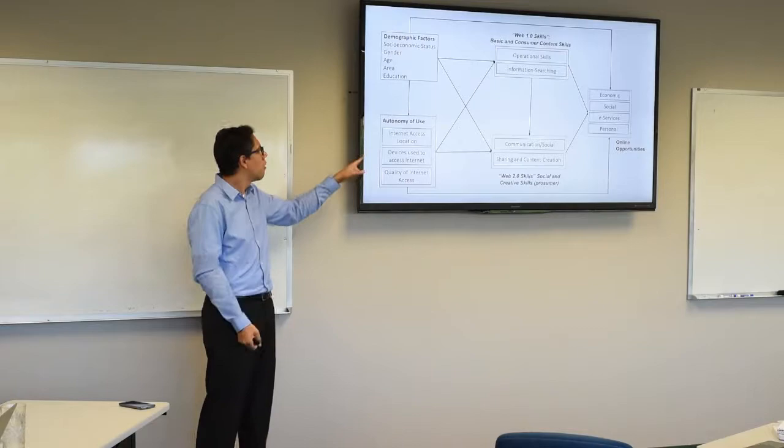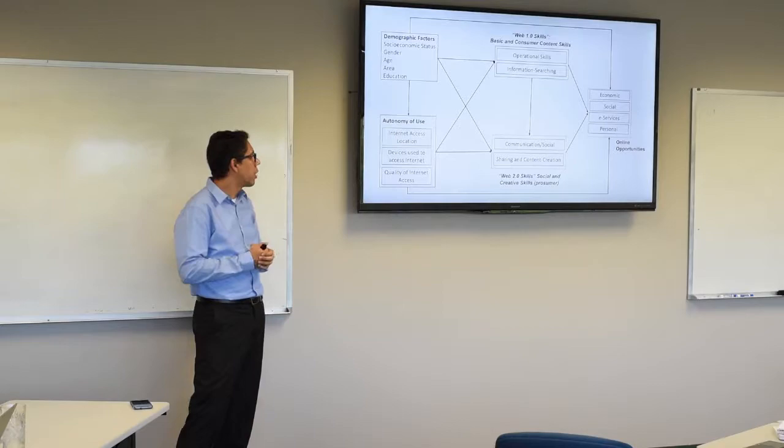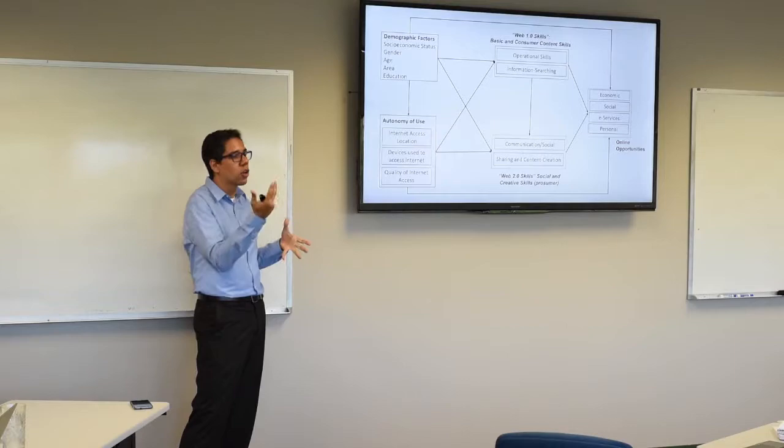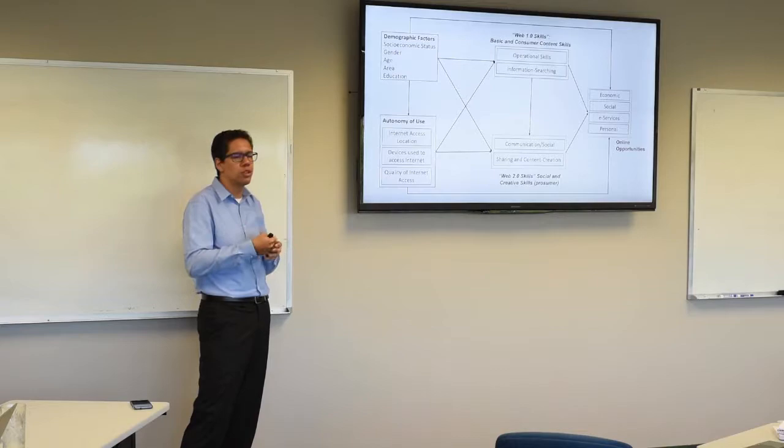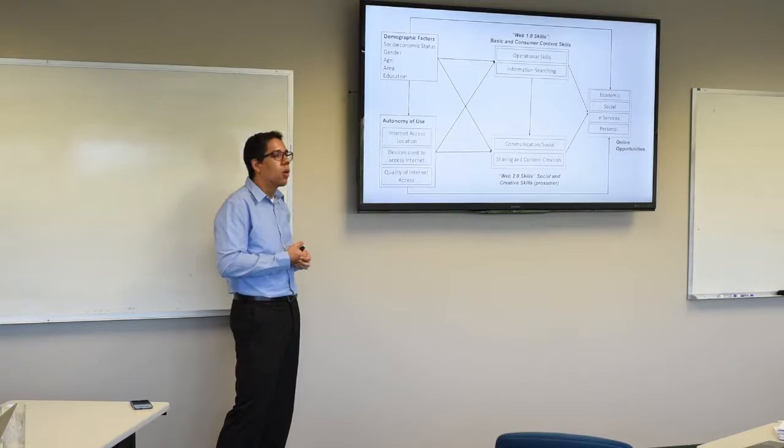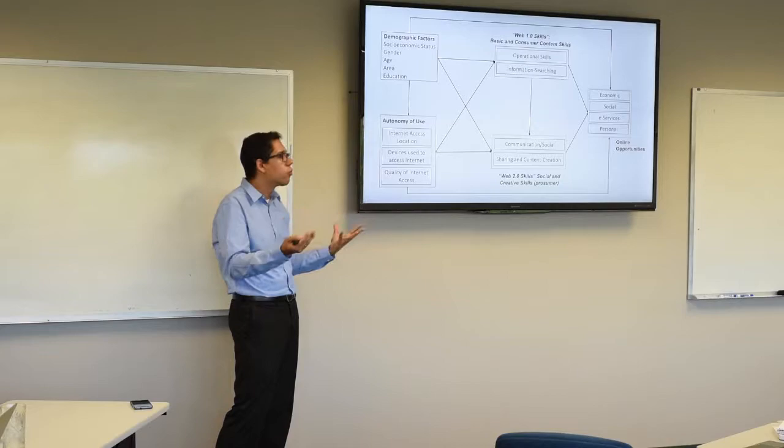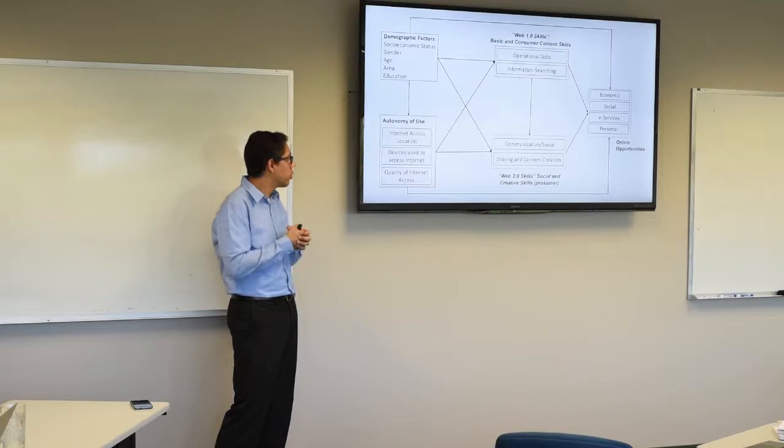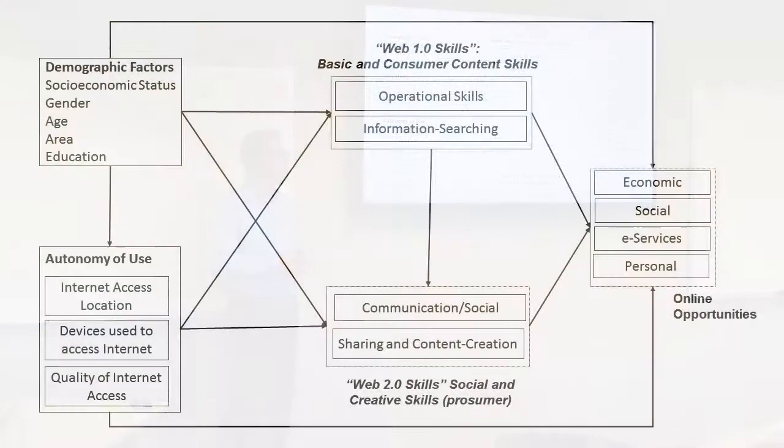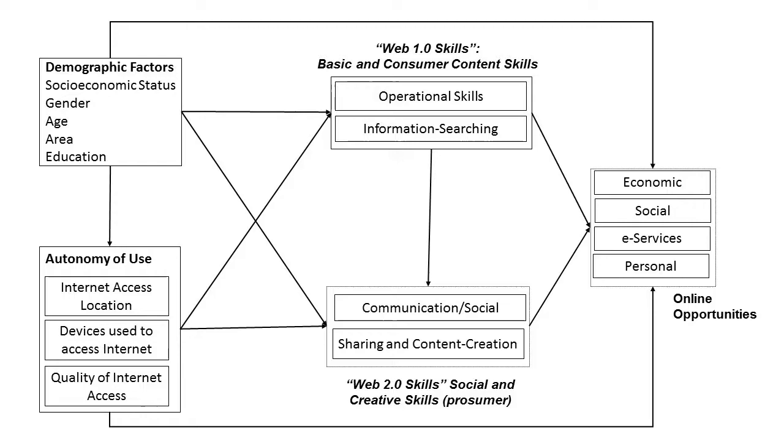And to operationalize this concept, we consider three complementary dimensions. First, the internet access location. I consider it as an important dimension because those who use internet at home and have opportunity to use in another place have much more autonomy of use than, for example, has opportunity to use the internet only in a telecentre. Device is another important dimension. We are asking which kind of device you use, only computer, only mobile, or both multi-platform. And then the quality of internet access. Because you can actually use internet anywhere, different devices, but if your quality of internet is not good, for example, like a dial-up connection, probably the quality or kind of interaction you have with the internet will be restricted. That's why I consider these three dimensions.